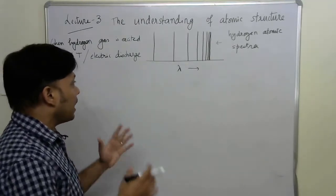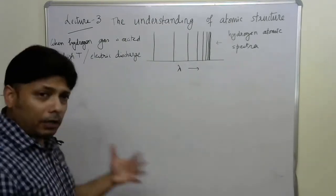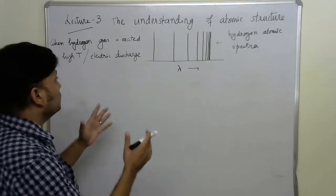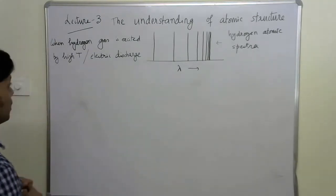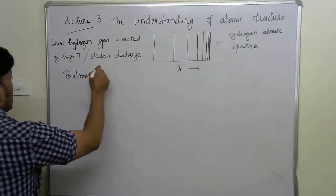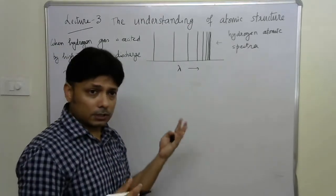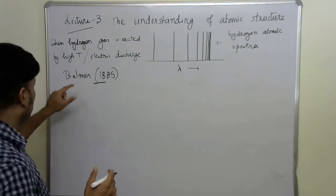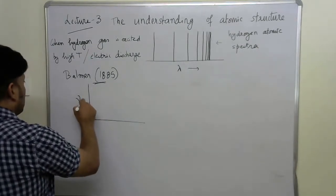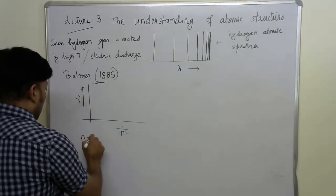But still people wanted to develop certain kind of empirical relationship between the numbers observed and the frequency or the wavelength recorded. For example, you must have heard about the Balmer series. In 1885, you can recognize the year is much before William Roentgen discovered x-ray, he noticed that there is a relationship between the frequency of those emitted lines versus 1 over n square, where n is a positive integer.